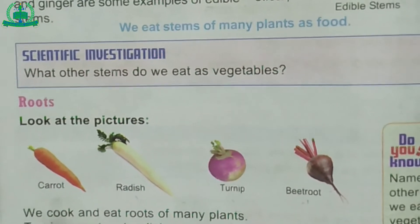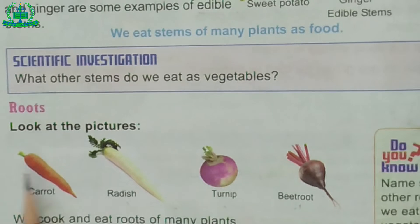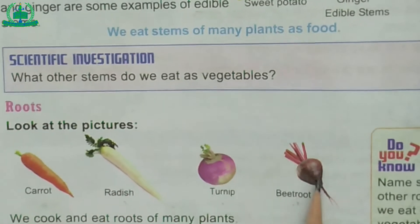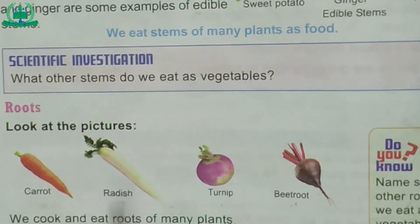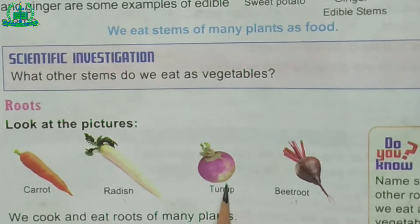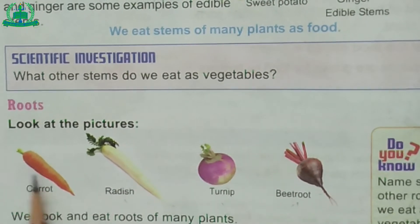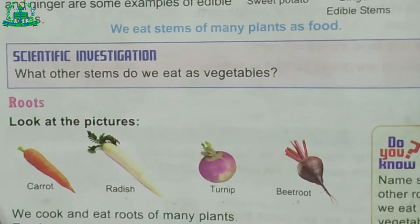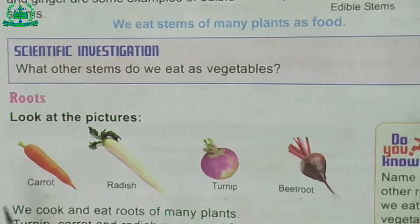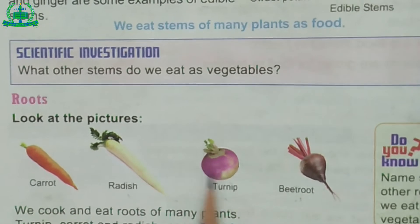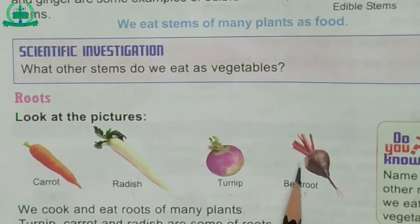Roots: We cook and eat roots of many plants. Turnip, carrot and radish are some examples of roots that we eat.